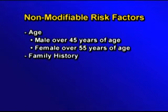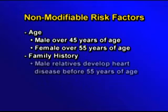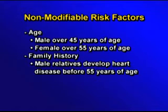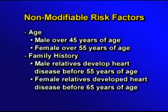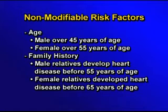To determine if you have a family history of premature heart disease, you would need to look at your male siblings and father. If they developed heart disease at the age of 55 or younger, that gives you a family history of premature heart disease. If your female siblings or mother developed heart disease at the age of 65 or younger, that also gives you a family history of premature heart disease.